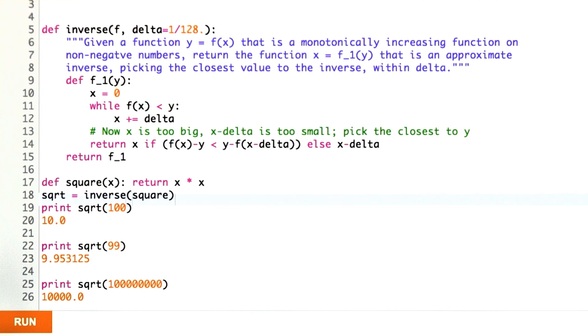When we ask for the square root of 100 million, we get 10,000 exactly, which is exactly the right answer, but it took a little bit too long. It took almost a second to come up with this result, and I'd like it to go much faster.